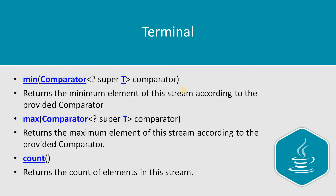Now we're done with the non-terminal operations — each one produces another stream as its result. Let's talk about terminal operations. The first is min: you pass a Comparator and it returns the minimum element of the stream. Similarly, max returns the maximum element. Count simply gives you the number of elements in the stream.